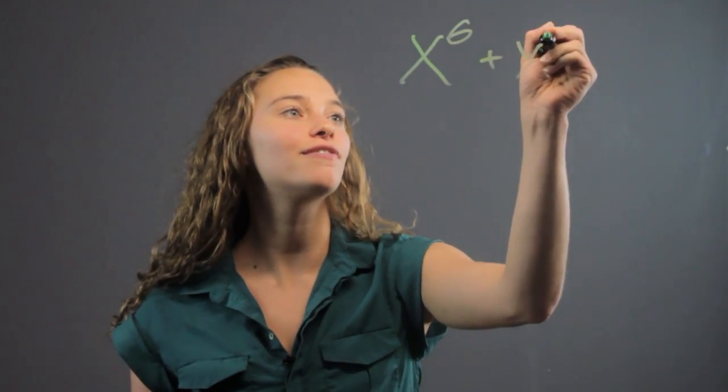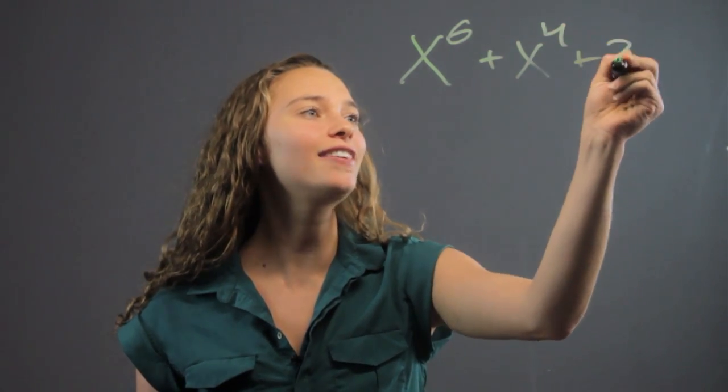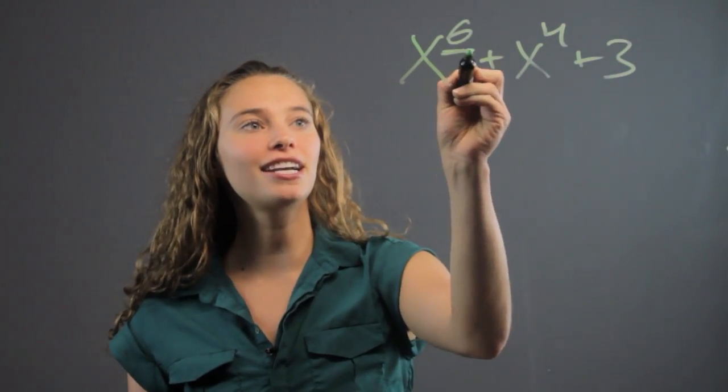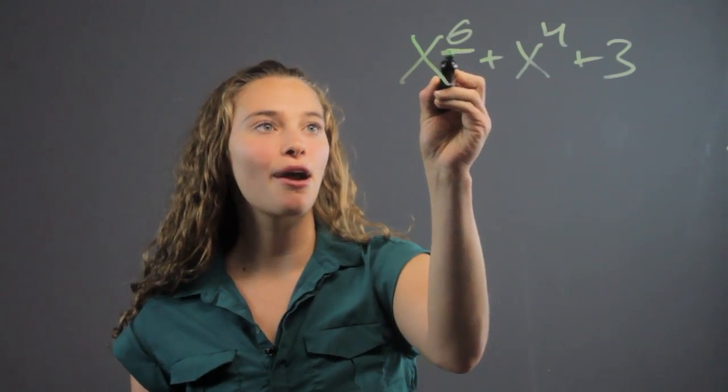So if we have a polynomial that's x to the sixth plus x to the fourth plus three, we know there's going to be six roots to that problem.